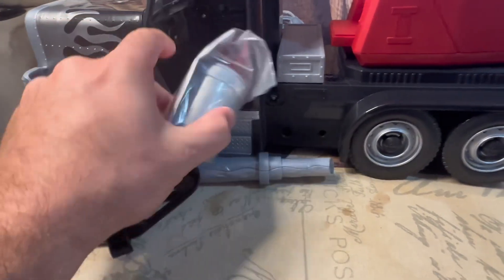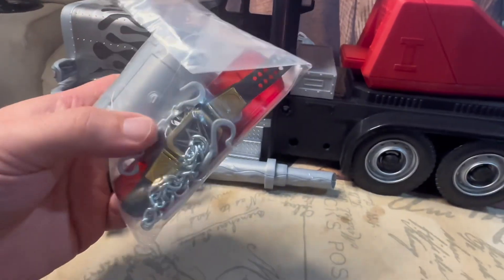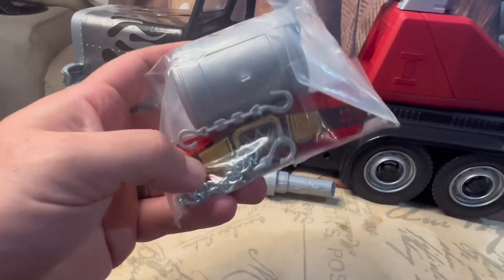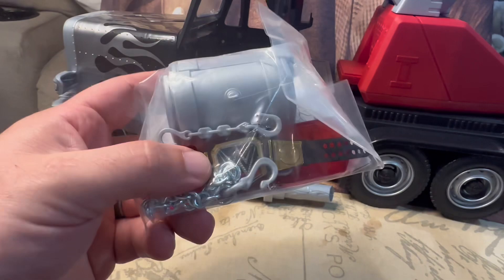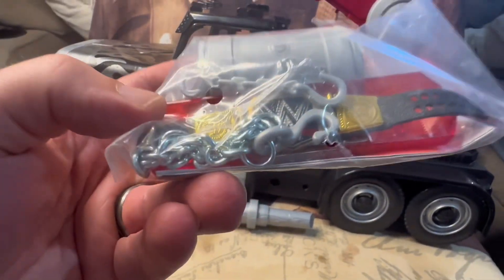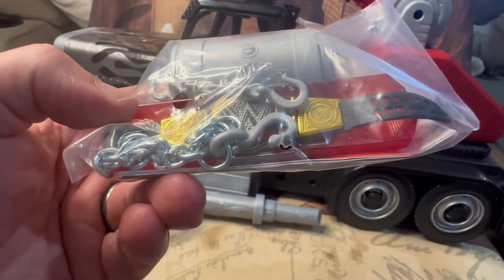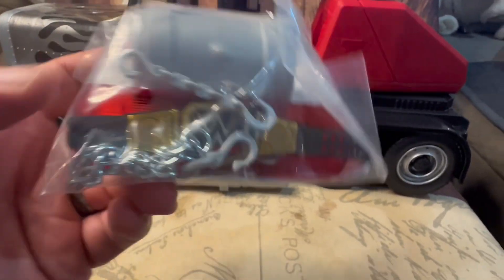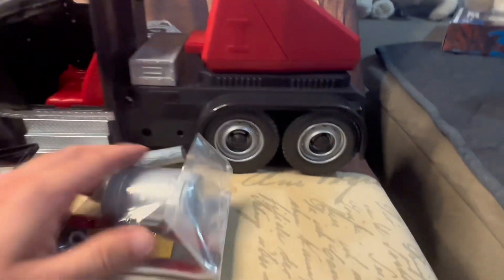Before we go any further, here is the accessories inside or some of them. Looks like you get a light to go on top I guess that breaks away. You get a chain, it looks like that's a real metal chain this thing comes with. And it comes with a decent looking WWE championship.